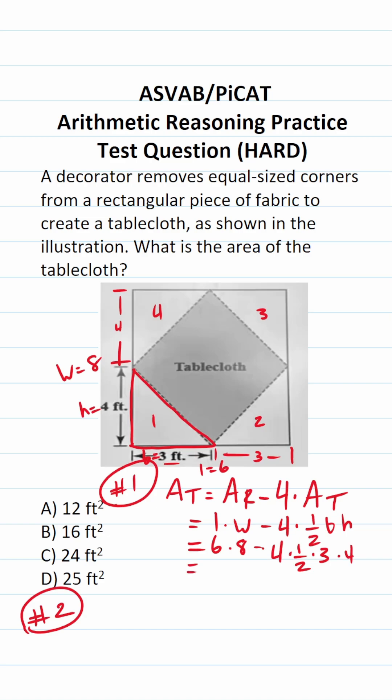So let's work this out. This is six times eight, which is 48, minus—what is four times one-half? That's just going to be two. What is three times four? That is 12. What is 48 minus two times 12 is 24. 48 minus 24 is going to be 24. So the area of this tablecloth is C, 24 square feet.